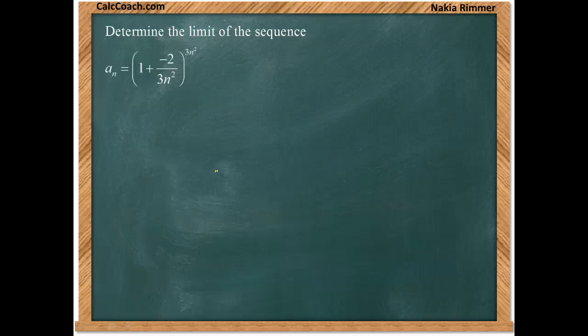Determine the limit of the sequence defined by the formula a sub n equals one plus negative two over three n squared, all raised to the three n squared.